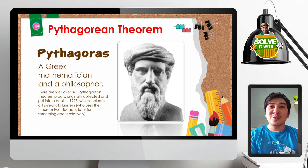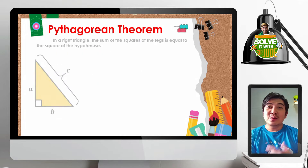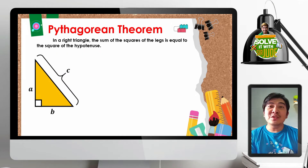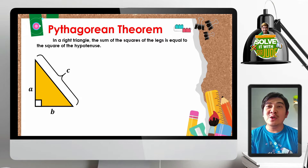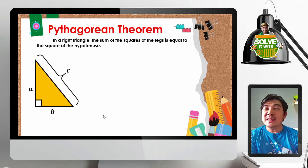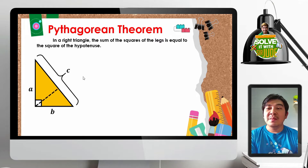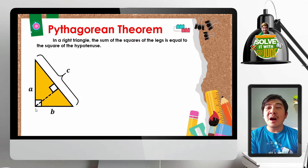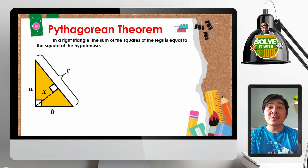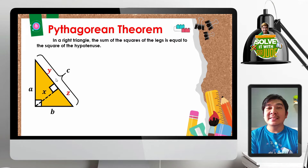Now, how did we arrive at the Pythagorean theorem? I hope you watched the previous video lesson about right triangle similarity, because we are going to derive that formula using the geometric mean. Let us have a triangle with sides A, B, and C, where C is our hypotenuse. We draw our altitude from our right angle to the hypotenuse and name that as X. This creates two new segments, Y and Z.